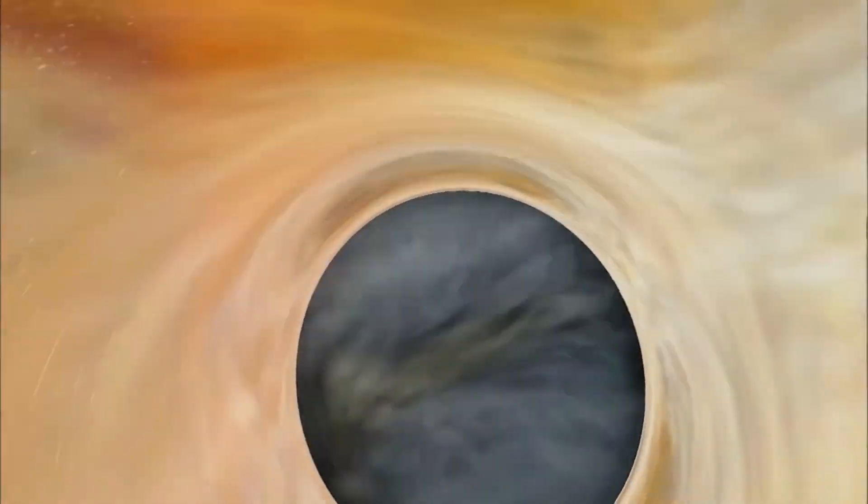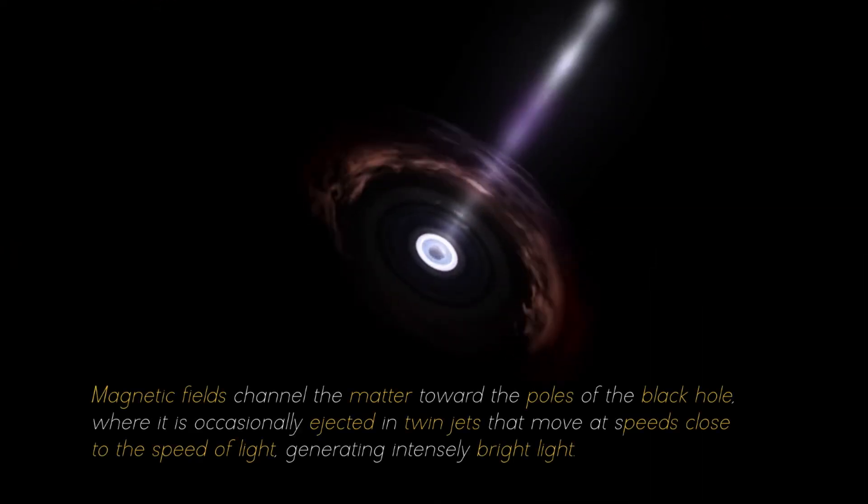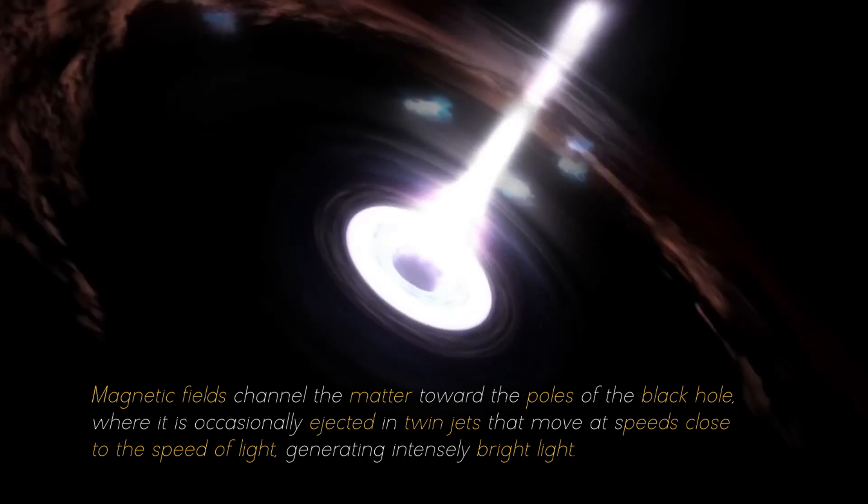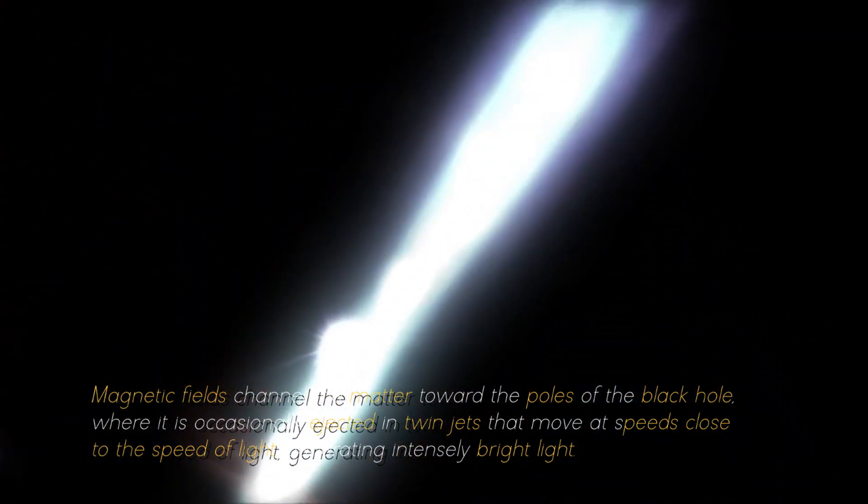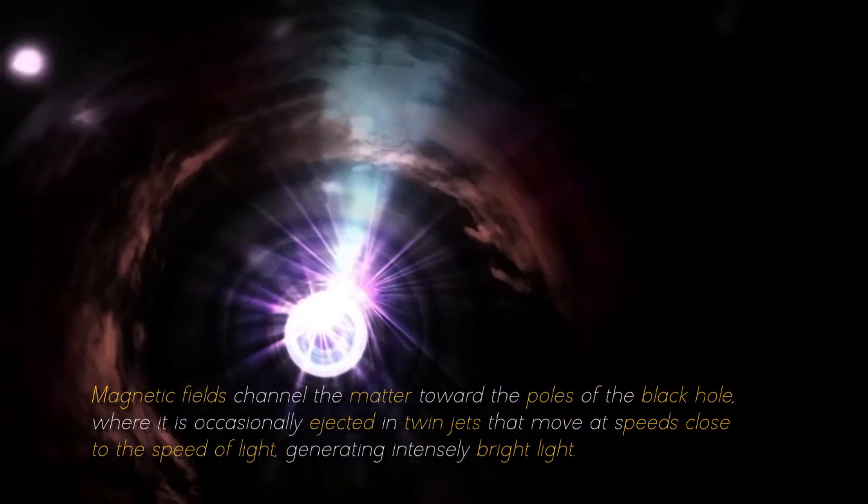The gravitational influence of the black hole heats this matter, causing the disk to glow brightly. Magnetic fields channel the matter towards the poles of the black hole, where it is occasionally ejected in twin jets that move at speeds close to the speed of light, generating intensely bright light.